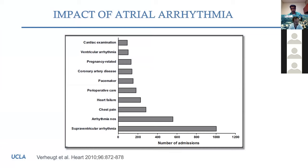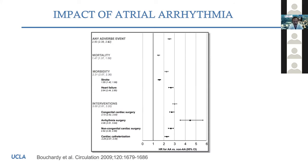The first question is: what do we end up ablating in congenital heart disease? The vast majority of catheter ablation procedures are for supraventricular tachycardia — mostly atrial arrhythmias, organized reentrant atrial arrhythmias. Looking at data out of Canada, the reason for hospital admission is dominated by supraventricular arrhythmias in the adult congenital heart disease population, and this is a major public health concern. It's associated with increases in mortality and morbidity in terms of stroke, heart failure, and requirement for various interventions, including cardiac surgery.